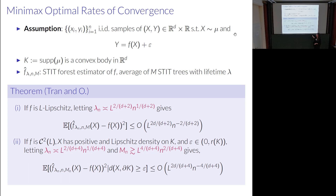For the twice-differentiable case, we also need that x has a positive density on its support, and we need to condition on the input being slightly away from the boundary. I apologize — I'm using epsilon twice: epsilon for noise and epsilon here for a fixed small distance from the boundary. This improved rate is the minimax optimal rate for C^2 functions. The dependency on epsilon in the boundary condition is absorbed into the big-O notation.